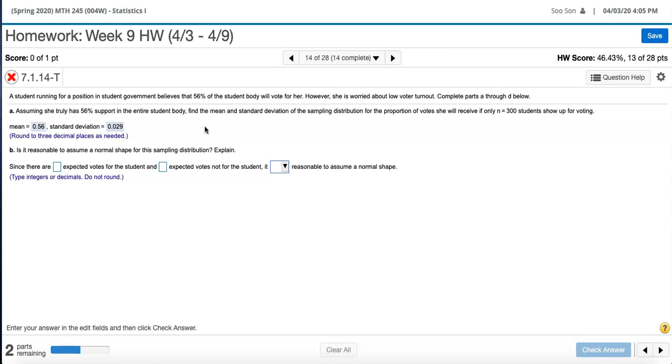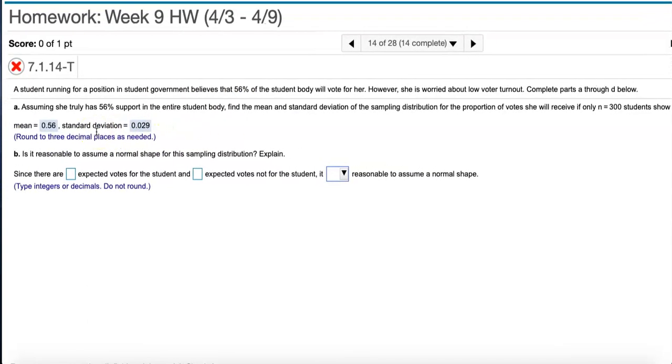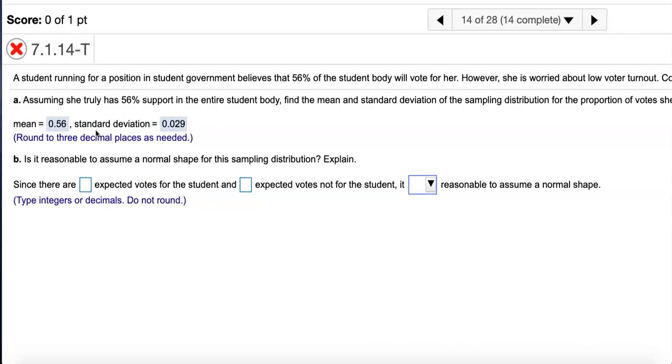On the homework they check each part for you, but unit practice test won't tell you until you submit the whole thing, so please do week nine homework first before you try the practice test. Now the second part: is it reasonable to assume a normal shape for this sampling distribution? Explain.